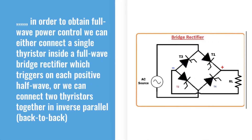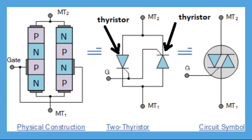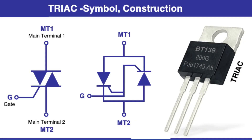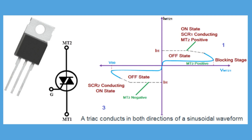In order to obtain full-wave power control, we can either connect a single thyristor inside a full-wave bridge rectifier which triggers on each positive half-wave, or connect two thyristors together in inverse parallel, back-to-back. But this increases both the complexity and number of components used. In order to reduce the complexity and number of components, a TRIAC device — also known as a triode AC switch — was designed. This TRIAC is made up of two thyristors connected back-to-back, hence it is a bidirectional switching device suitable for alternating current.